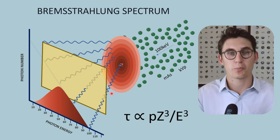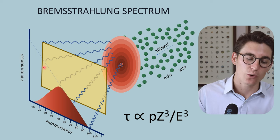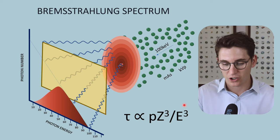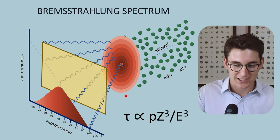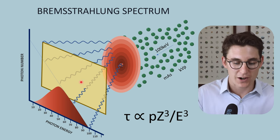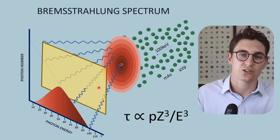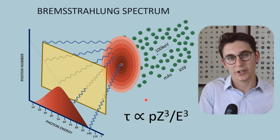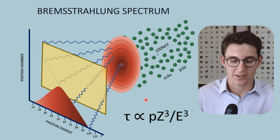If we place a filter between our target material and our patient, we preferentially filter out these lower energy x-rays — those that contribute to patient dose but don't contribute to our image. This occurs via the photoelectric effect. As the energy of x-rays increases, the likelihood of the photoelectric effect decreases, so we preferentially attenuate lower energy x-rays and higher energy x-rays are more likely to pass through the filtered material. This filter can represent our inherent filtration — the glass envelope, conducting oil, and x-ray tube window — or the added filtration placed between the x-ray tube and our patient.